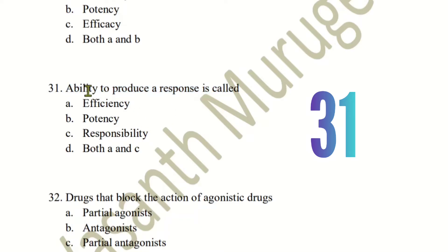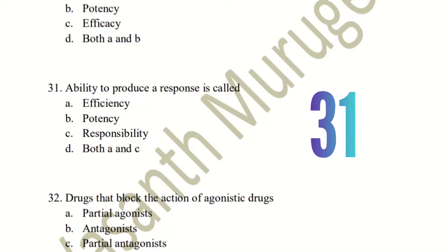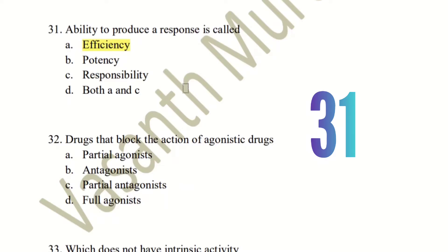The ability to produce a response — the choices are efficiency and potency. Potency is like a dose: a small drug amount producing an effect, so that is potency. The ability of a drug to produce its maximum effect is called efficacy or efficiency. If a drug produces an effect at 50 mg rather than 100 mg, that smaller dose requirement is called potency.